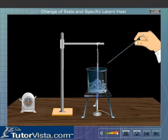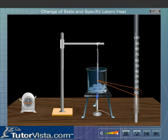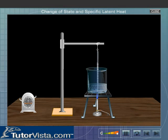Keep stirring the ice water mixture constantly so that the temperature is uniform throughout. We observe that the thermometer reading remains constant at 0 degrees centigrade though heat is being constantly supplied. The temperature remains constant till the ice completely melts to water at 0 degrees centigrade.